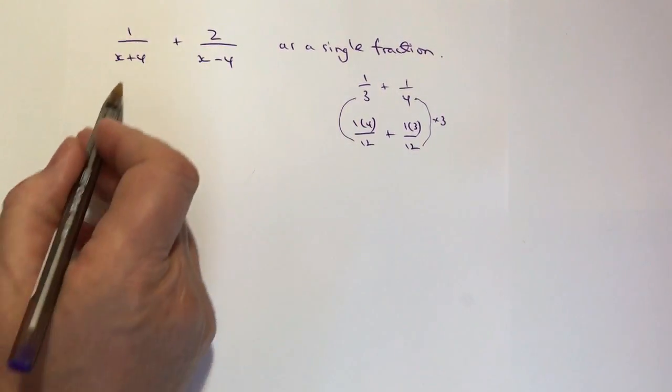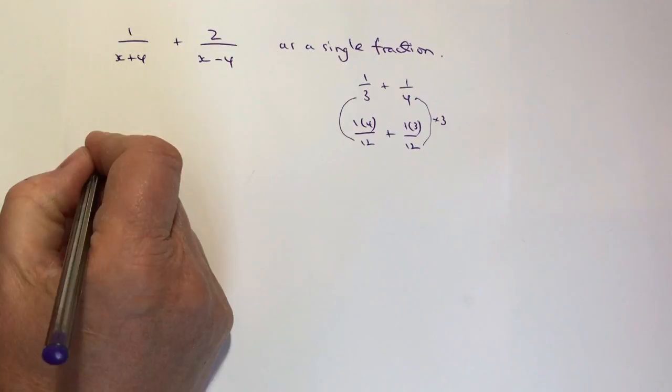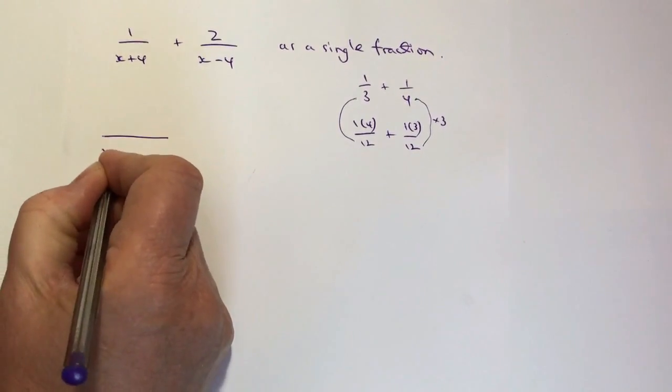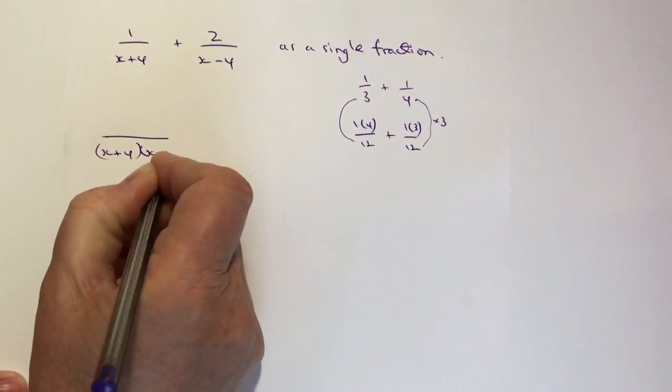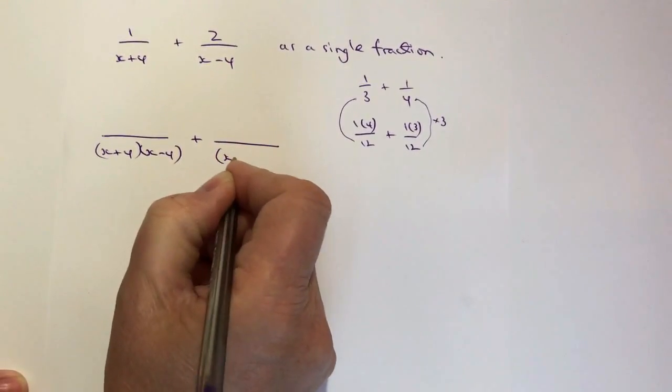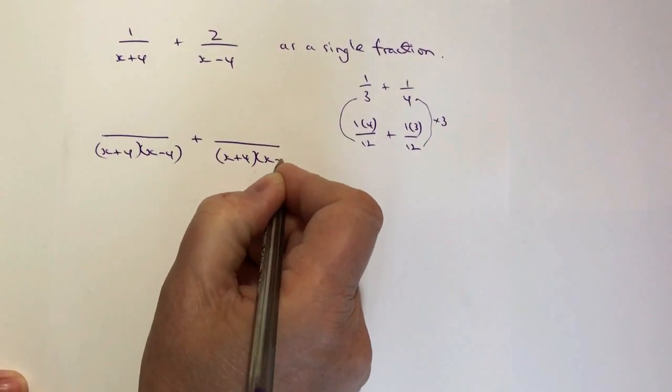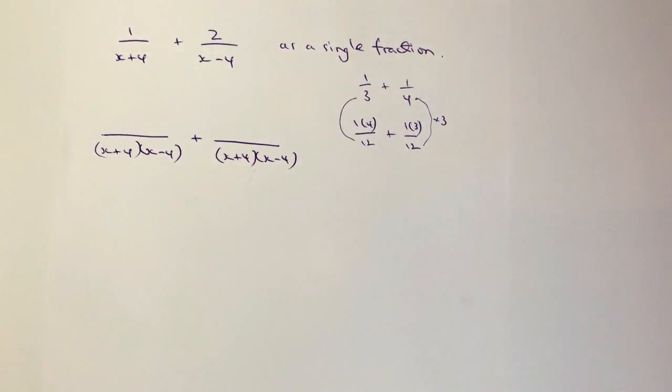So if I look at this I want to make these two denominators the same so what I'm going to do is make both of them x plus 4 multiplied by x minus 4 and then it'll be a case of making sure that the denominators are multiplied by the correct amount.